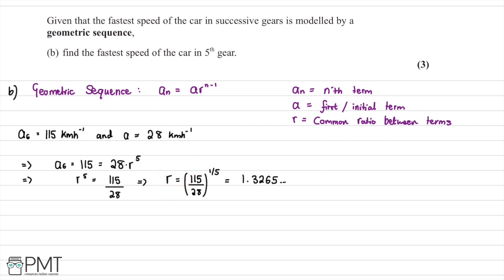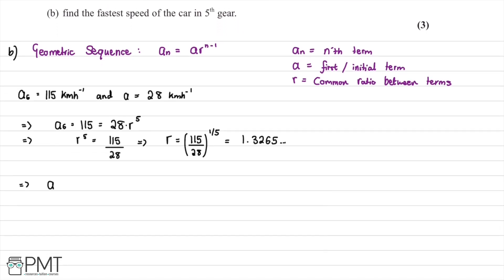We've now worked out R. To find the fastest speed in fifth gear, A5 equals 28 multiplied by 1.3265... to the power of 4 — that's 5 minus 1. I stored the full value in the calculator to keep accuracy. Putting this into the calculator gives 86.6941 and so on, which we round to three significant figures to get 86.7 kilometers per hour.